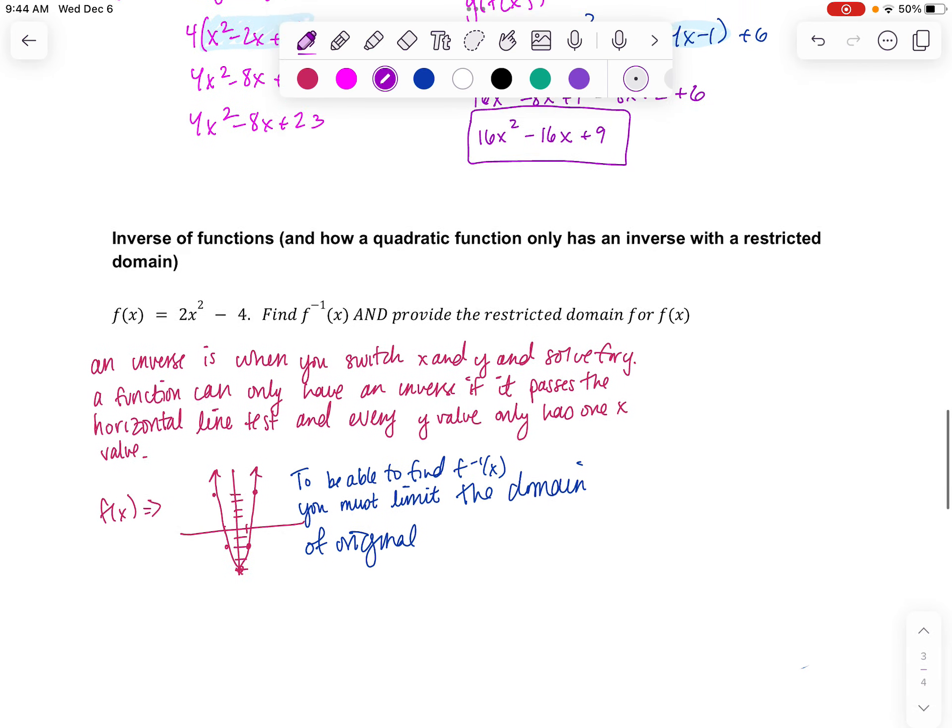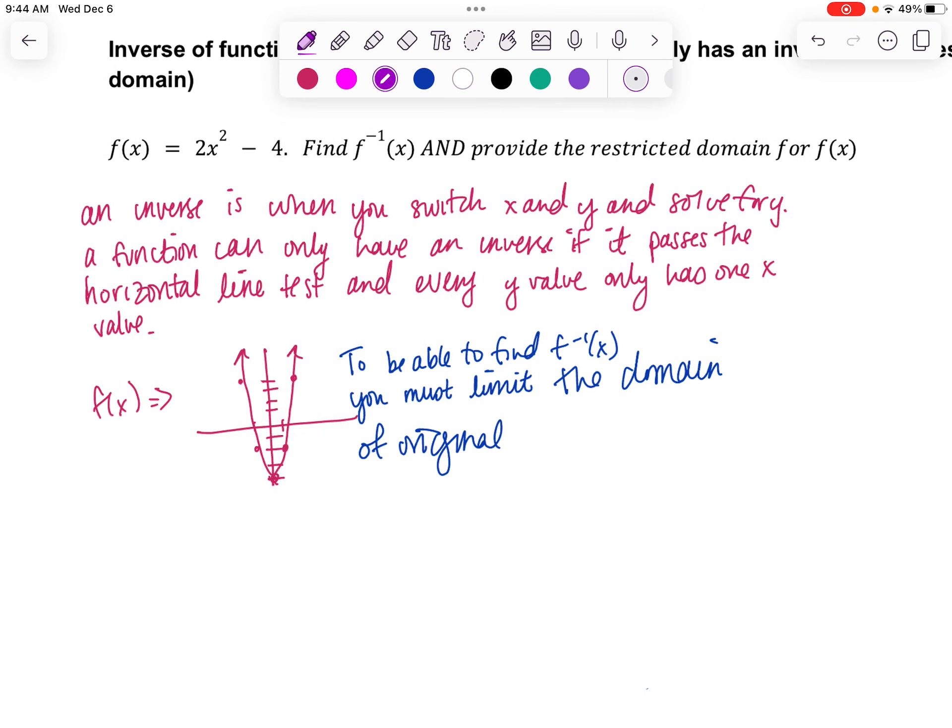All right, last but not least are inverse functions. So fundamentally when you take a function and you find its inverse, that means you're going to be switching the x and y values and solving for y. That's how you find your inverse function. In terms of our domain and our range, the domain of your original function becomes the range of your inverse and your range becomes your inverse. So all of these x's and y's essentially switch. Well, the only way that a function can have an inverse is if that function is 1 to 1, meaning that every x has 1 y and every y has 1 x.